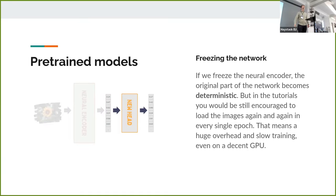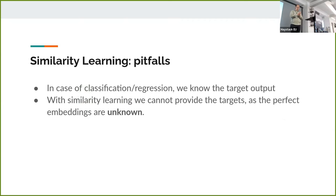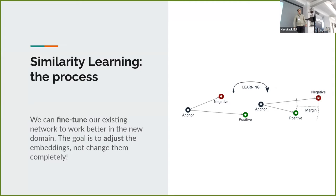There's another problem: in similarity learning, we create data sets differently. We do not know the perfect embeddings for a given input — we want the network to find them. Instead of target outputs, we provide the network with differently structured data sets. The whole process of similarity learning is to move points in the latent space: the positive examples — with an anchor from the data set — should be closer to it, while negative ones should be further away, no matter how we calculate the distance.